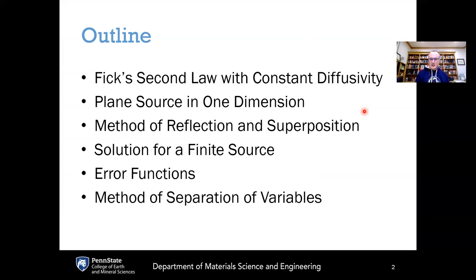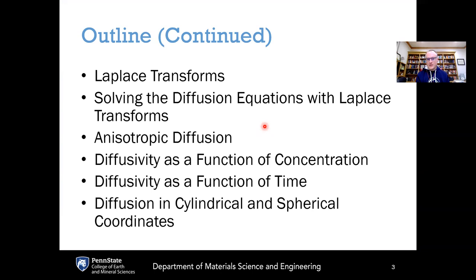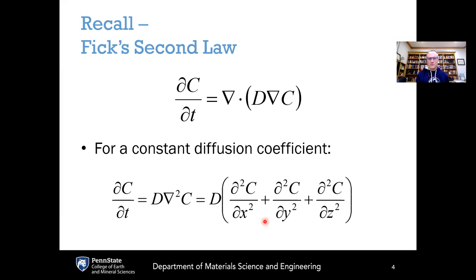What we're going to cover today is Fick's second law with constant diffusivity. We're going to cover several different methods of deriving closed-form analytical solutions of the diffusion equation, starting with a plane source in one dimension. Then we'll cover the method of reflection and superposition, solution for a finite source, error function solutions, the method of separation of variables, the Laplace transform method, and special cases of anisotropic diffusion where diffusivity is a function of direction, concentration, or time, as well as diffusion in cylindrical and spherical coordinate systems.